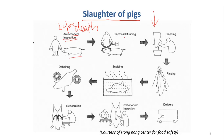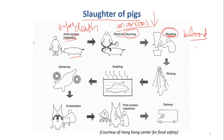The next step is electrical stunning. Stunning is a process to make the animals unconscious — unconscious doesn't mean they are dead; they are still alive. Then the next step is bleeding. Before bleeding, we do stunning. The first objective is to make the animals not feel pain — when they are unconscious and you kill them, they don't feel pain.